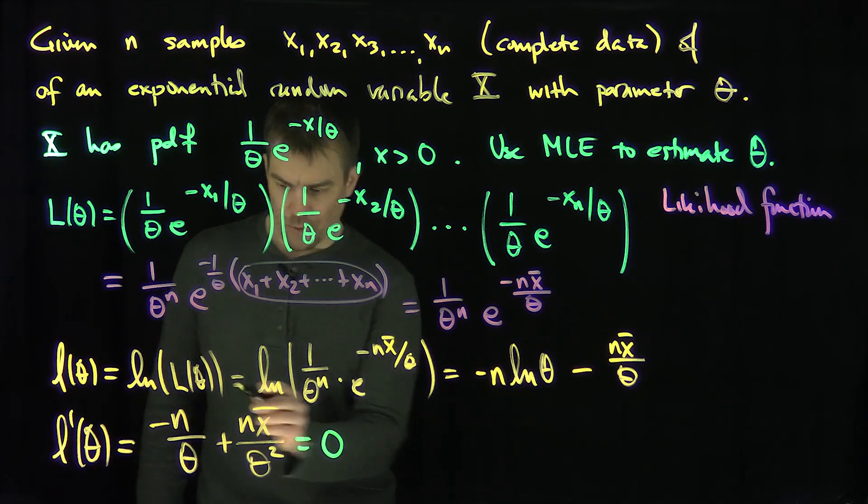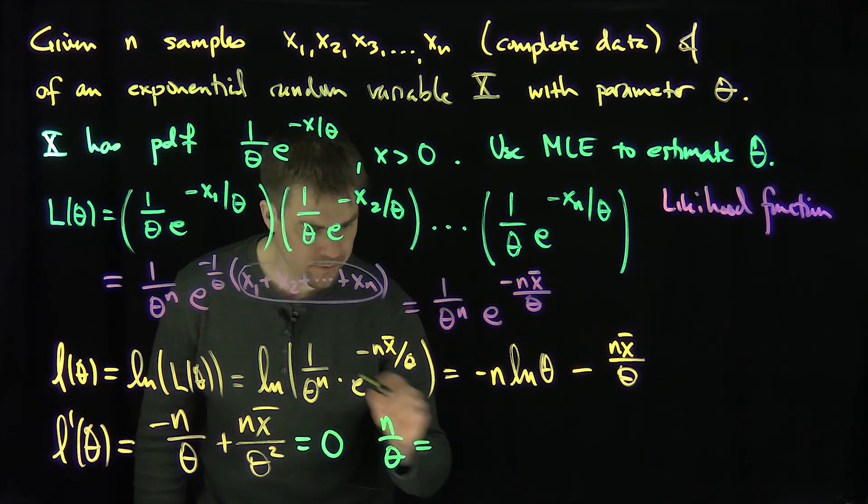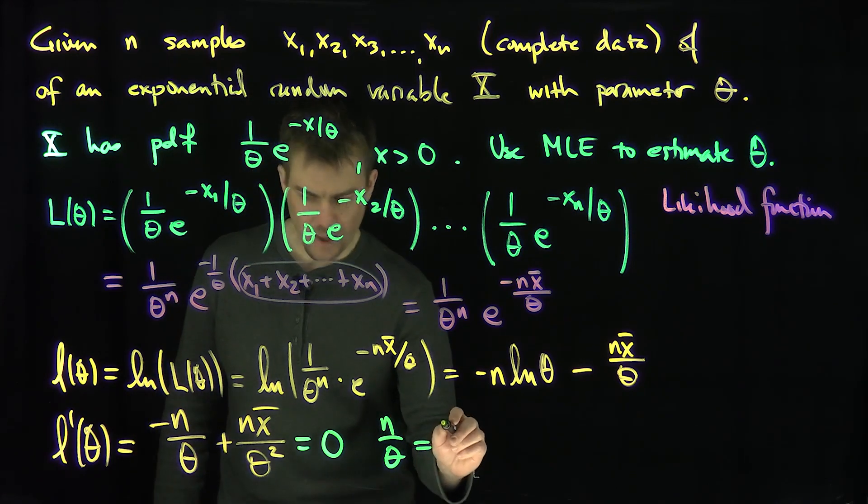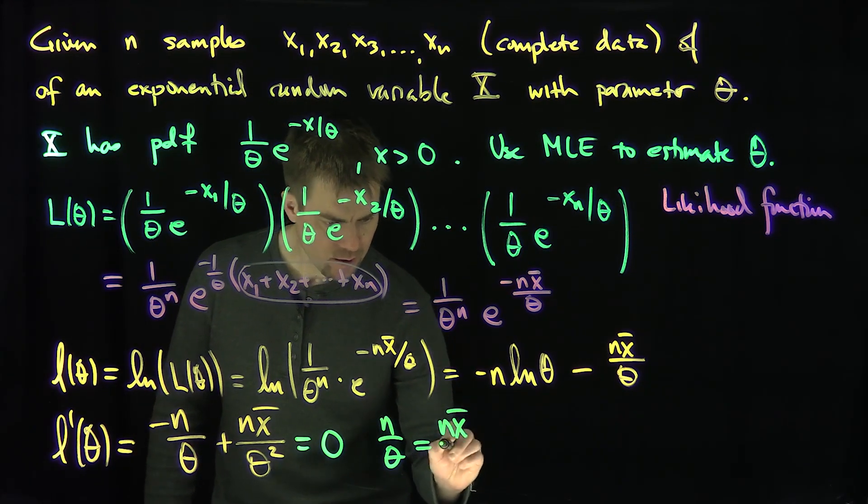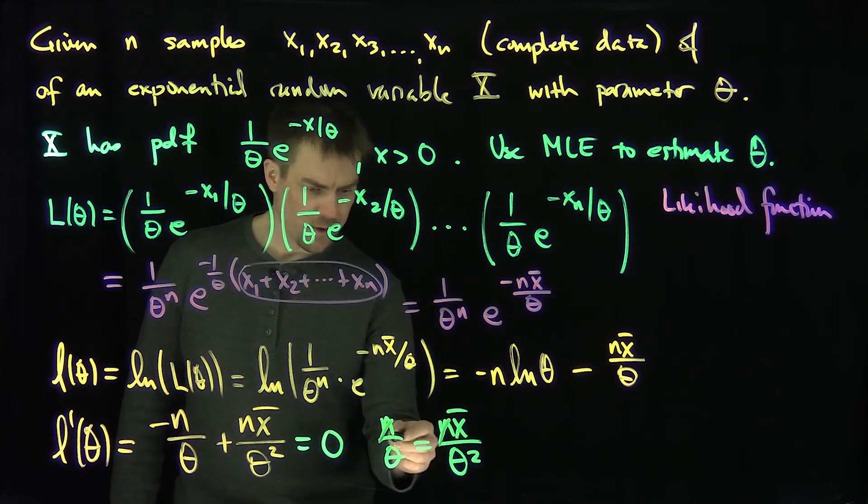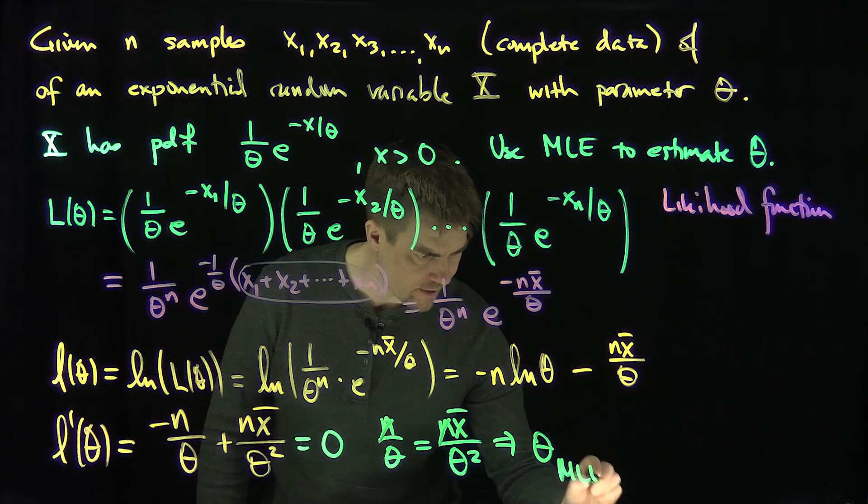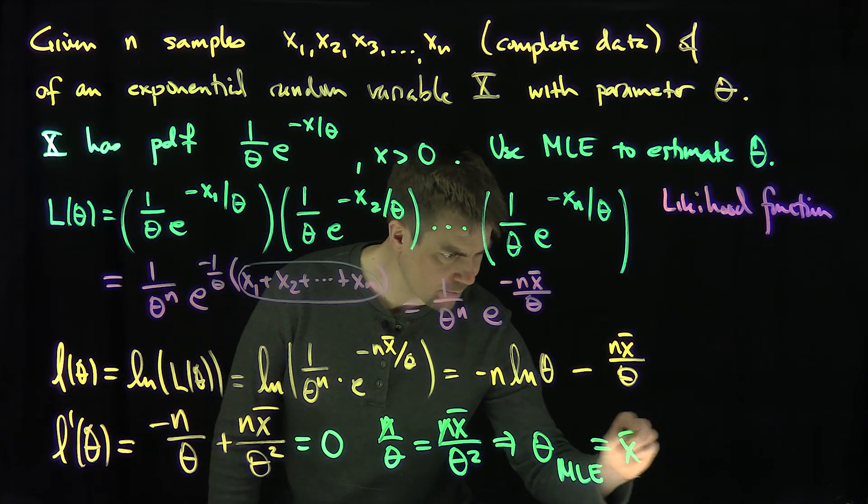And so what I get is that the n's are going to cancel. I'm going to have n over theta is equal to n x bar over theta squared. The n's cancel. And I'll throw this over there. And that tells me that theta MLE, the maximum likelihood estimator for theta, in this case, is just x bar.